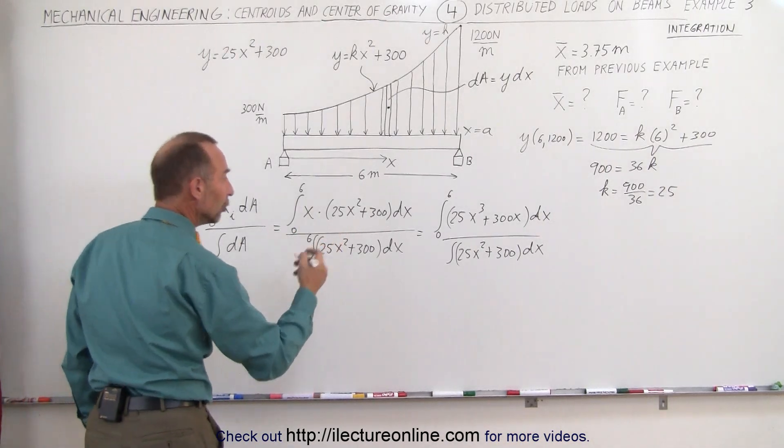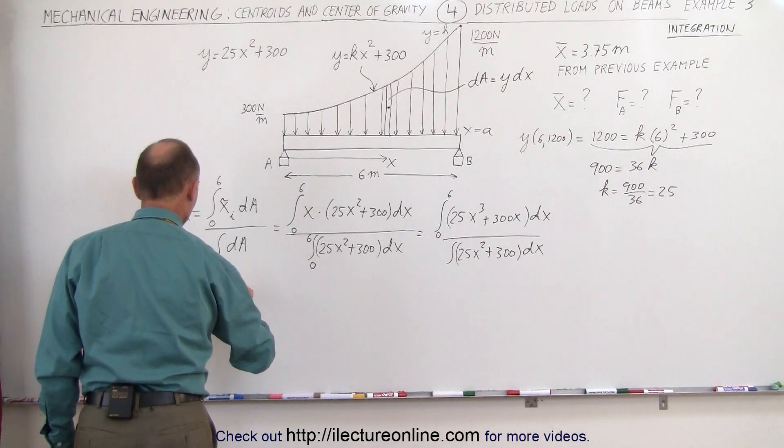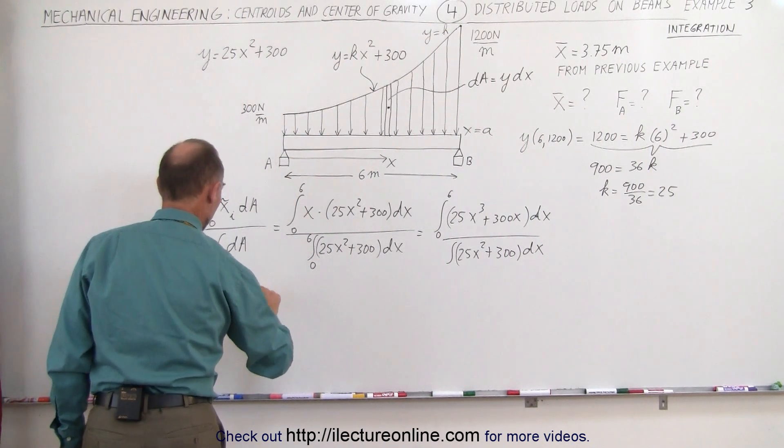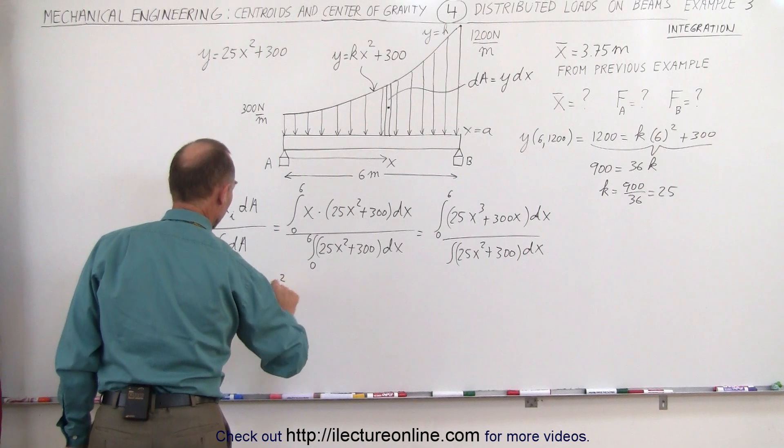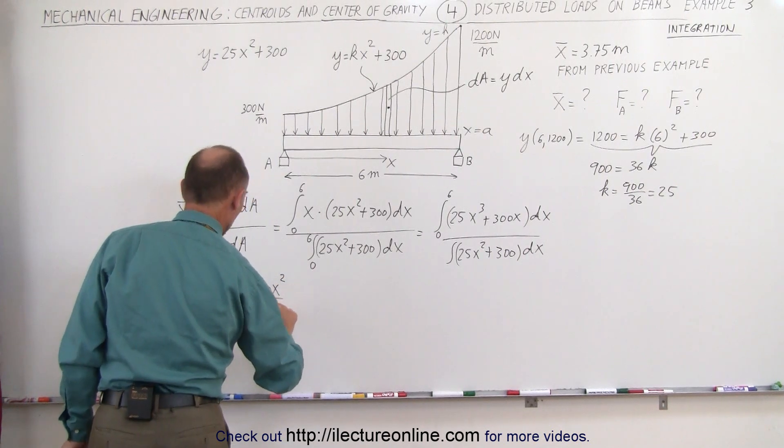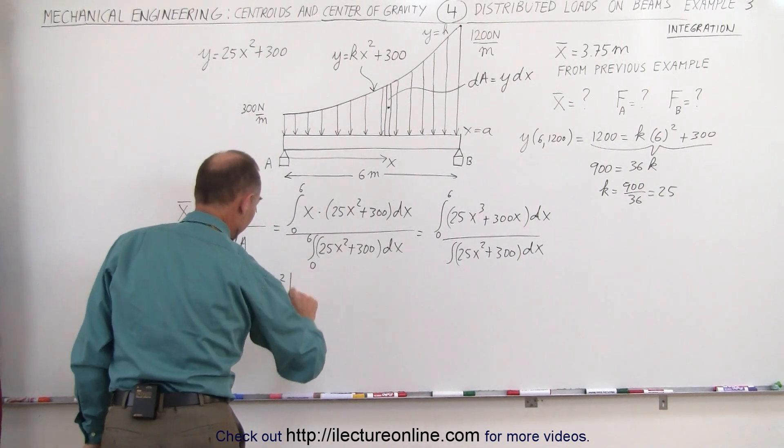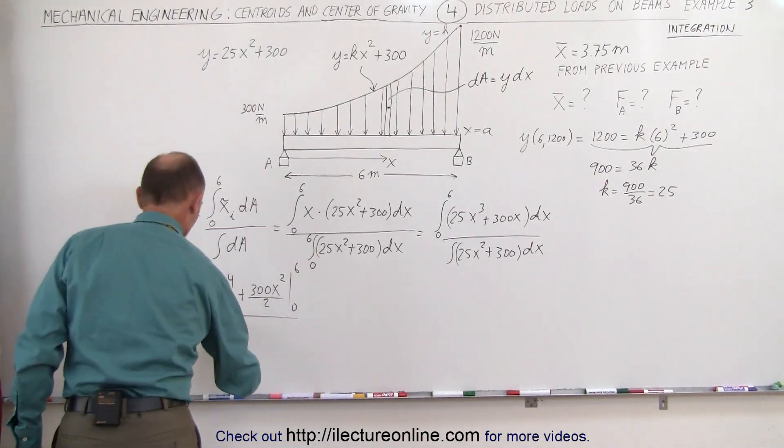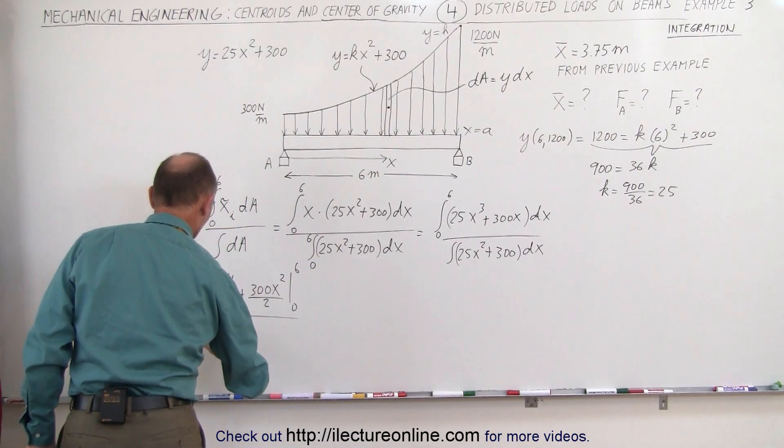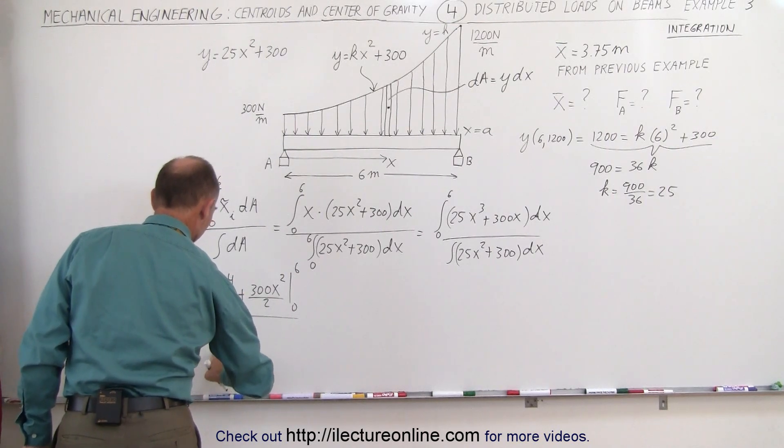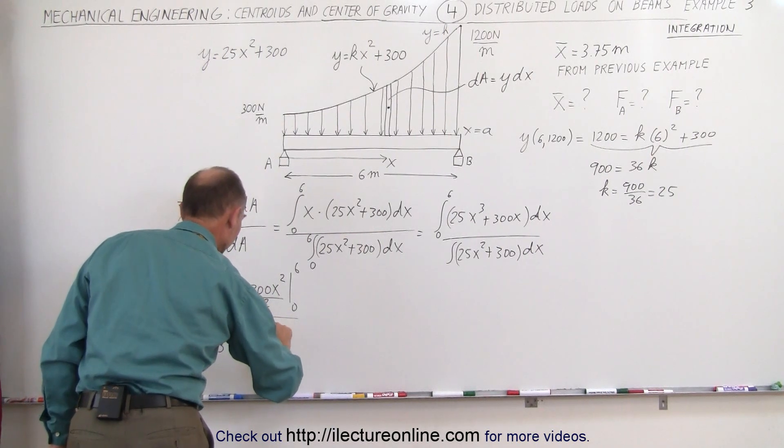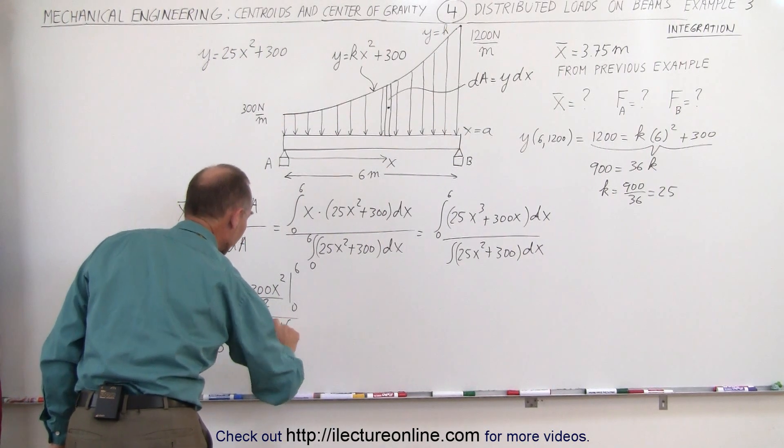This is equal to integrating the numerator we get 25x to the 4th divided by 4 plus 300x squared divided by 2, and that's evaluated from 0 to 6 of course. In the denominator we get 25x cubed over 3 plus 300x, again evaluated from 0 to 6.